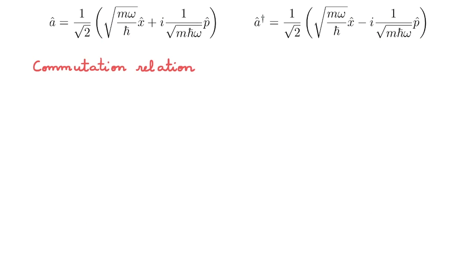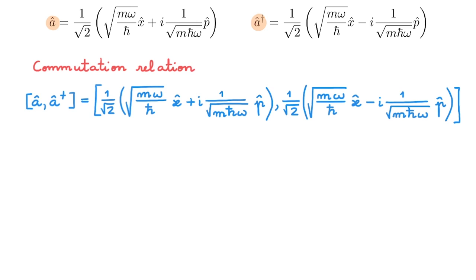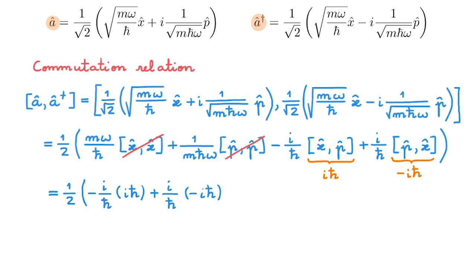Let's start with their commutation relation. The only non-trivial commutator is that between a and a dagger. Using the definitions of the lowering and raising operators we can expand this commutator into four terms: the commutator between x and x, between p and p, between x and p, and between p and x. These first two commutators vanish as they are commutators of an operator with itself. The third is the canonical commutation relation, giving iℏ, and the fourth is its negative. Overall the expression simplifies, combining to give 1, so the commutator of a and a dagger equals 1.